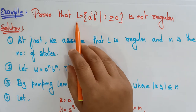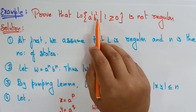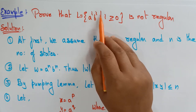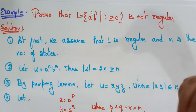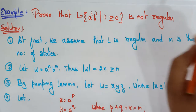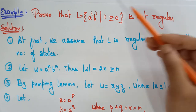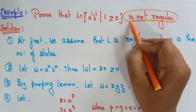Here I have taken L = {aⁱbⁱ | i ≥ 1}, meaning i should be greater than or equal to 1. So a⁰b⁰ is not accepted. I have to prove it is not a regular language.